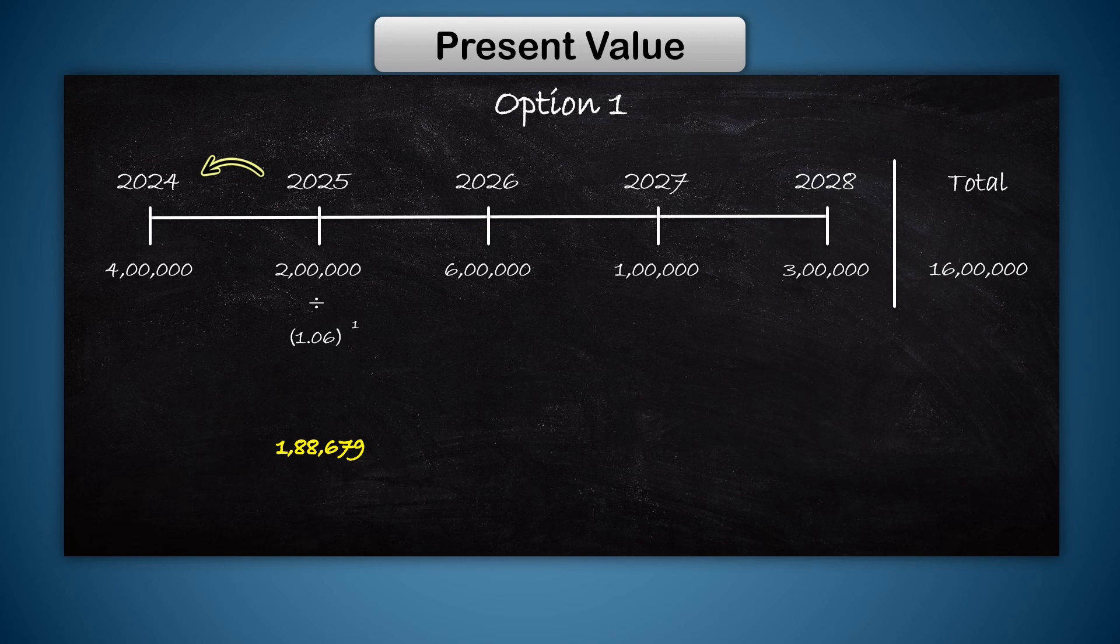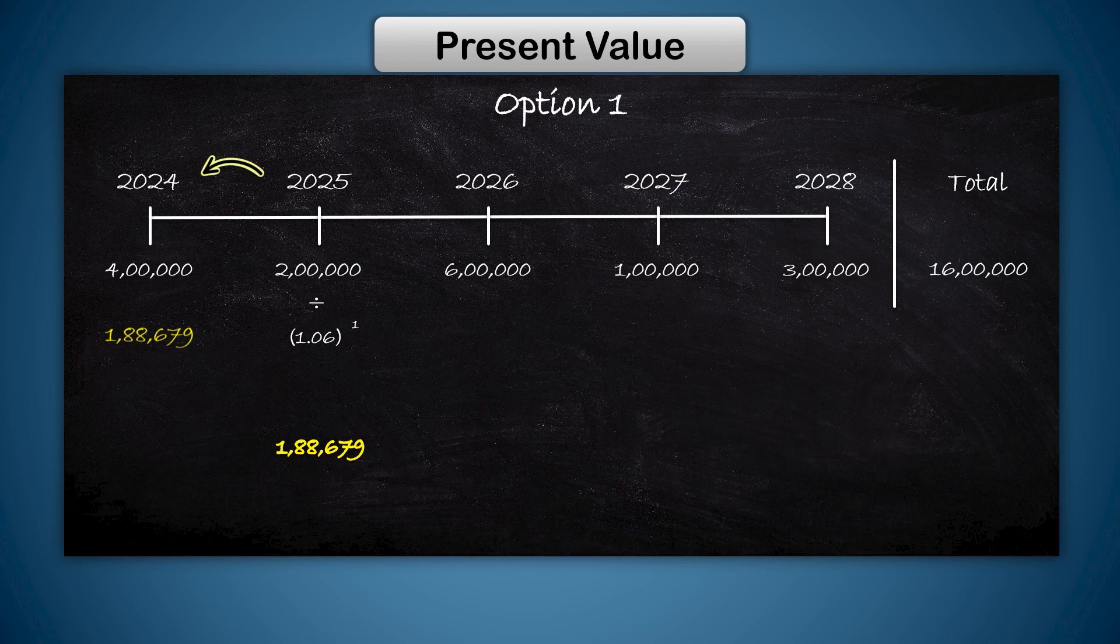This means that getting 2 lakh in 2025 is as good as getting 1 lakh 88,679 in 2024. By 2025, there would have been a reduction in the value of money by 6 percent. So what you can buy with 2 lakh in 2025 is only as much as what you can buy with 1 lakh 88,679 in 2024.